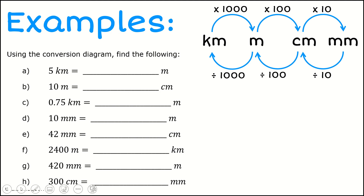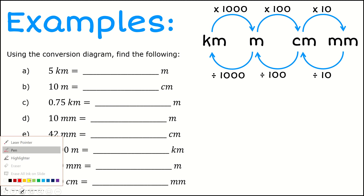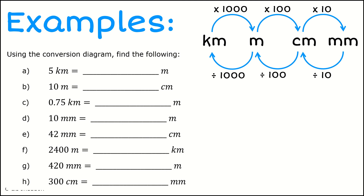Using that diagram, let's see if we can do some conversions. If I've got kilometers and I want to convert kilometers into meters, looking at my diagram I can see I want to multiply by a thousand. So five times a thousand gives me five thousand meters.